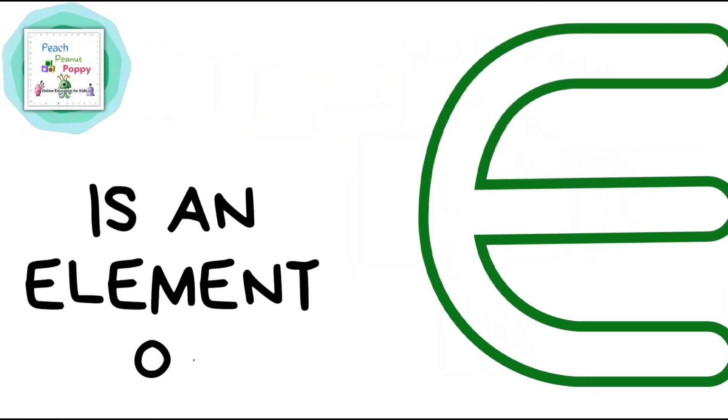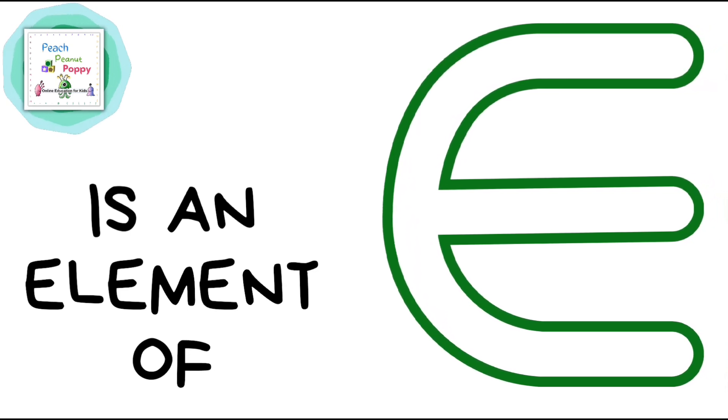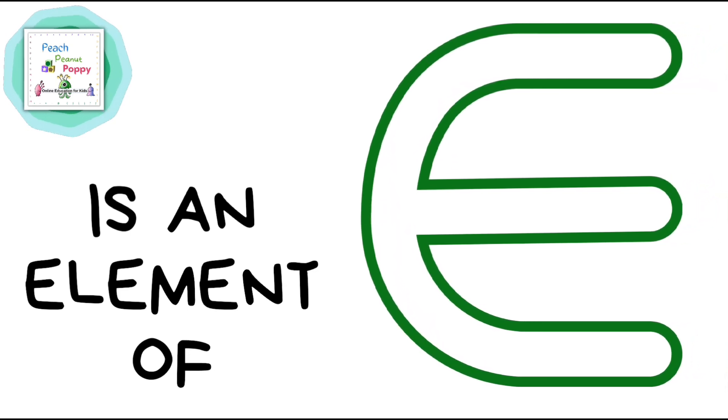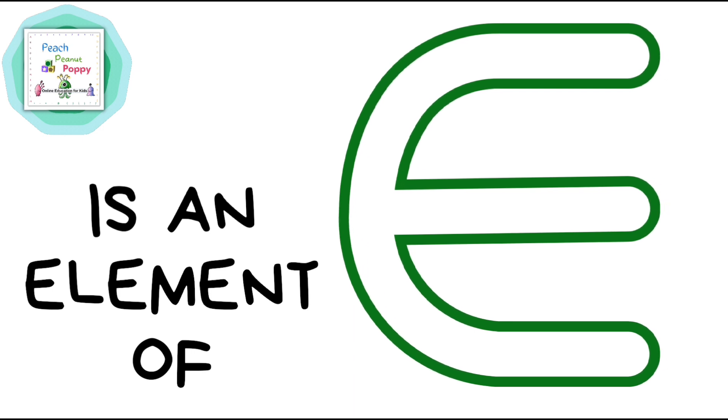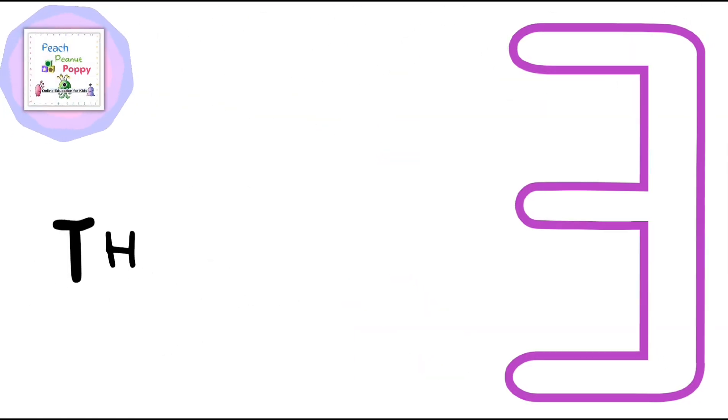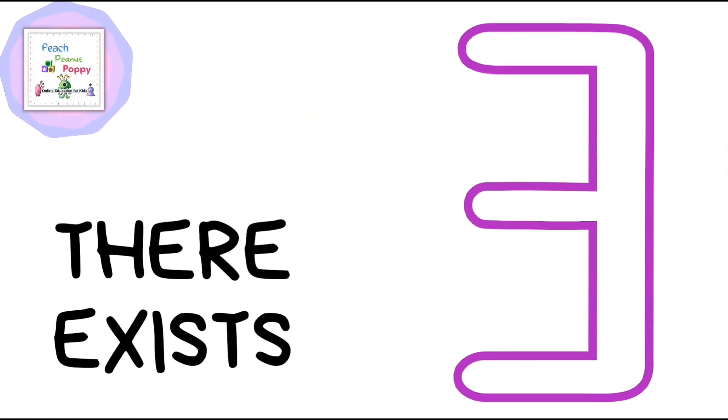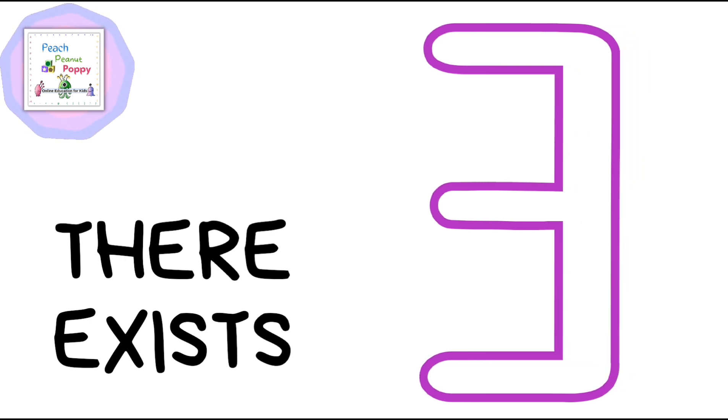The next sign on our list looks like this and is called Is an Element Of. Is an Element Of. The next one is for There Exists. There Exists.